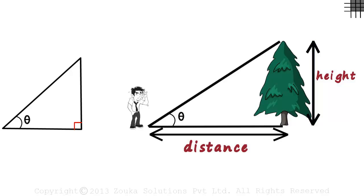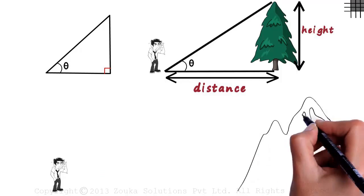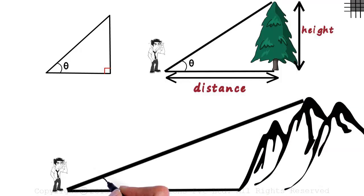Finding the height of a tree may not sound appealing to you, but the next example surely will. This time, Zen wants to find the height of a mountain. If this distance is known and this angle is known, then the height can easily be found out. But how?